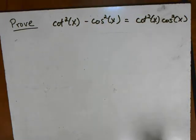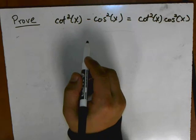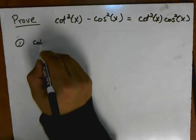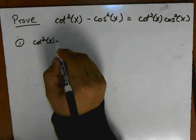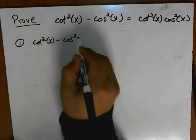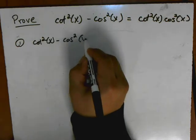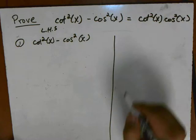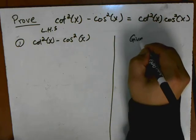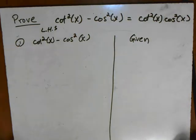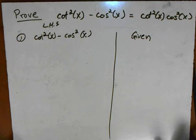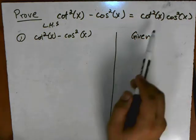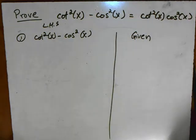I'm going to start this proof with the left-hand side. So step one: cotangent squared of x minus cosine squared of x. This is my left-hand side, and my reason here is that it's a given. I'm going to use some trig identities and some properties of algebra to somehow show that this statement is really equal to the statement on the right-hand side.